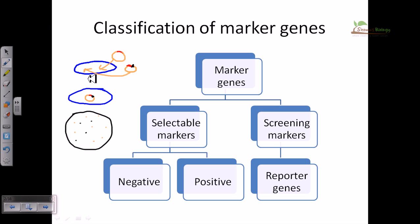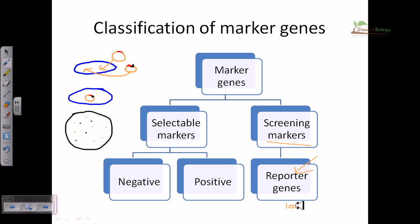That's how the importance of selectable markers comes in. Screening markers are those markers which help us screen between different types of elements — for example, from a thousand different expression types we need to screen for one particular species. Reporter genes let us screen a particular variation; for instance, from 100 different variations we want only that variation which changes in color but not in enzymatic activity. We can screen using the property of changing color from a sequence.